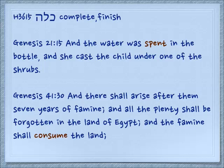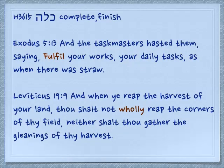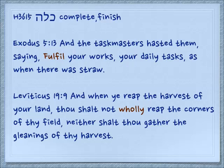Genesis 41:30: 'And there shall arise after them seven years of famine, and all the plenty shall be forgotten in the land of Egypt, and the famine shall consume the land.' Exodus 5:13: 'And the taskmasters hasted them saying, fulfill, complete, finish your works, your daily tasks, as when there was straw.' Leviticus 19:9: 'When you reap the harvest of your land, thou shalt not wholly, completely reap the corners of your field.'